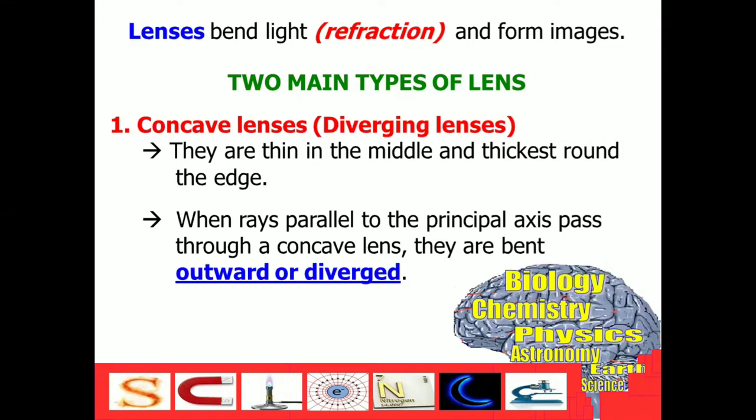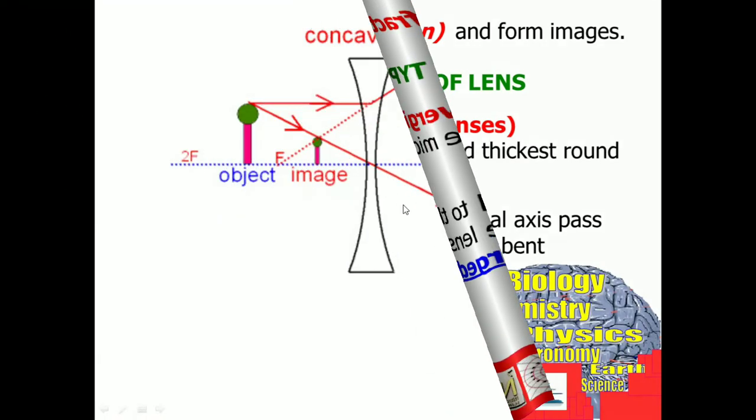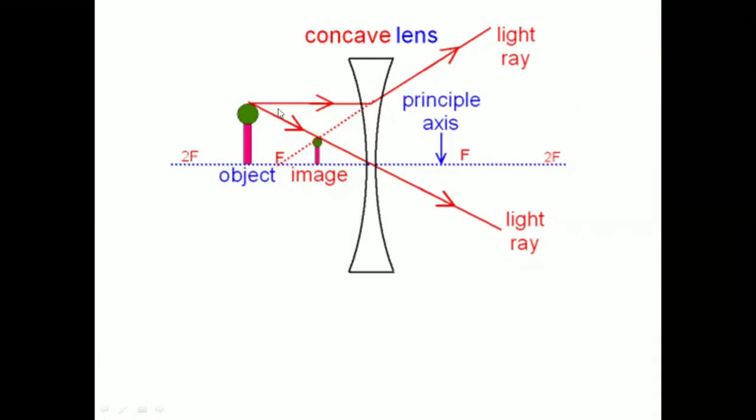they are bent outward or diverge. It is the main reason why it is called diverging lenses. When we say diverging, it means that it spreads out the light. As you can see, the light rays here spread out as it has contact with the concave lens.